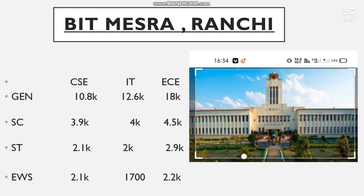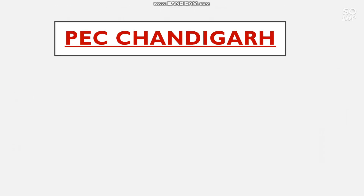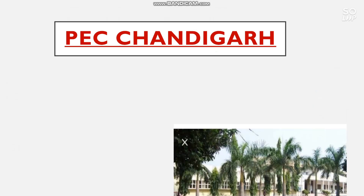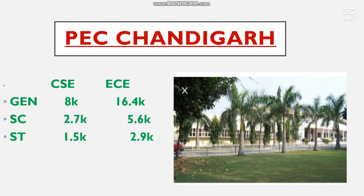Number 1 GFTI based on cutoff is PEC Chandigarh. Cutoff for CS and EC: General — CS 8,000, EC 16,400; SC — 2,700 and 5,600; ST — 1,500 and 2,900; EWS — 1,600 and 3,300. There is also no OBC reservation in this college.